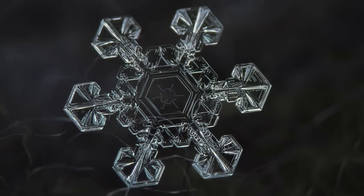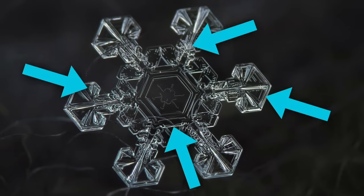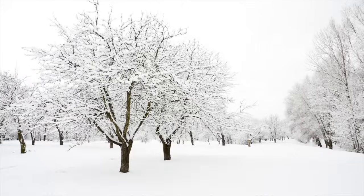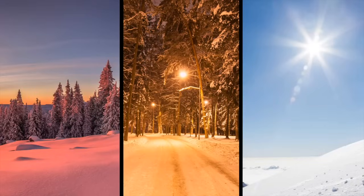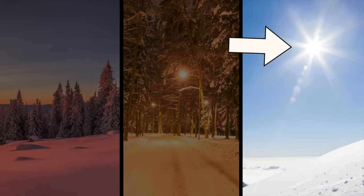So in summary: snowflakes are mostly clear, except for their bumps or edges — it's at the edges where it looks more white. When we're looking at snow, we're seeing lots of snowflakes all piled together, so we're seeing all those edges. The reason the edges of each snowflake look white has to do with the color of the sunlight. Sunlight looks white when it's the middle of the day. So snow is white because the sun is white. But if the sun were blue or purple, then snow would look blue or purple too.